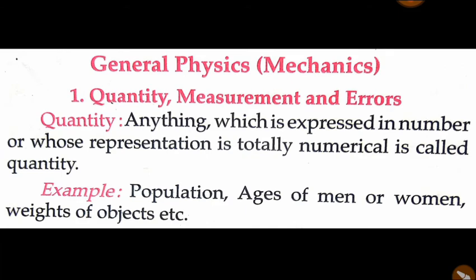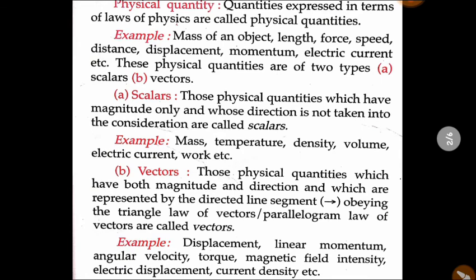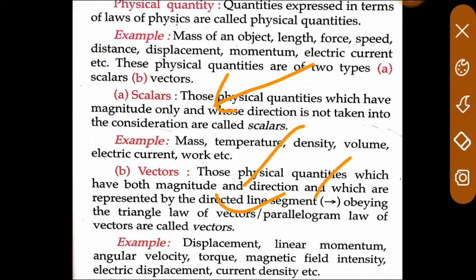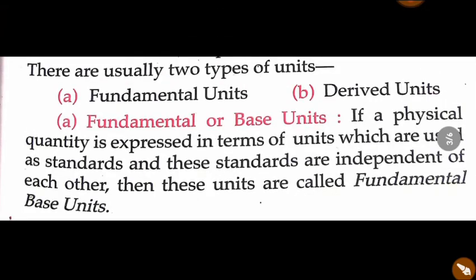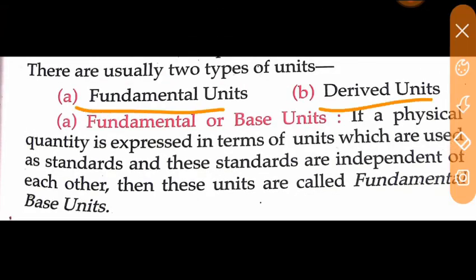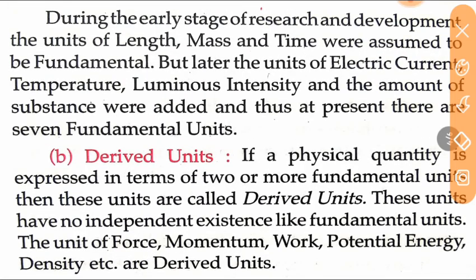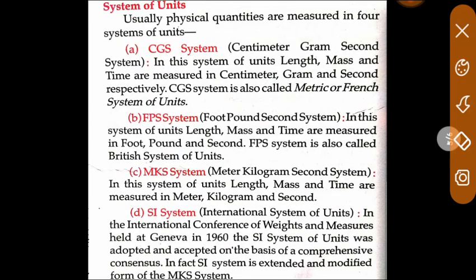To summarize: quantity is anything expressed numerically. Physical quantity includes scalar quantities, which have only magnitude, and vector quantities, which have both magnitude and direction. Units are divided into fundamental units—length, mass, time, electric current, temperature, luminous intensity, and amount of substance—and derived units, which combine fundamental units.